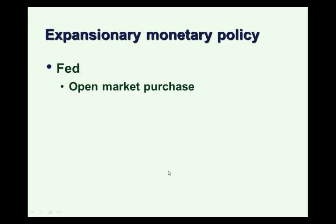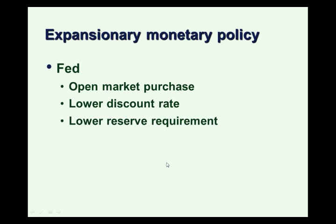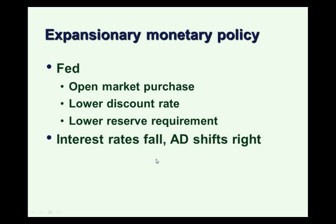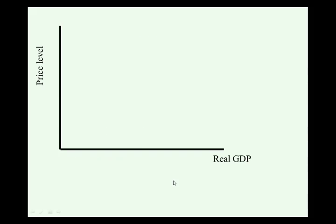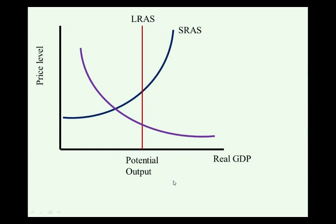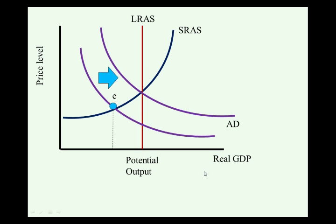Expansionary monetary policy by the Fed would be an open market purchase, a lower discount rate, or a lower reserve requirement. All of these are types of expansionary monetary policy. The end result would be to make interest rates fall, which encourages spending and causes aggregate demand to shift right. So expansionary monetary policy would be something the Federal Reserve does to close a recessionary gap. In the graph, expansionary monetary policy looks the same — it's a shift to the right in aggregate demand towards long-run equilibrium. How that happens is where the difference lies.